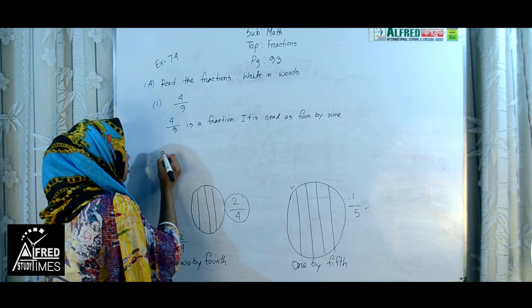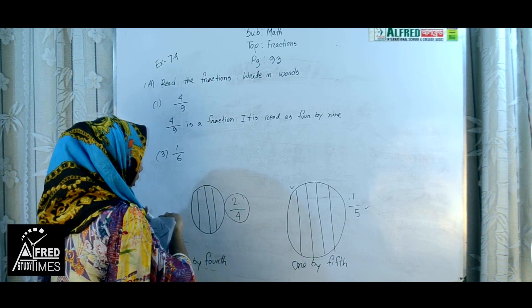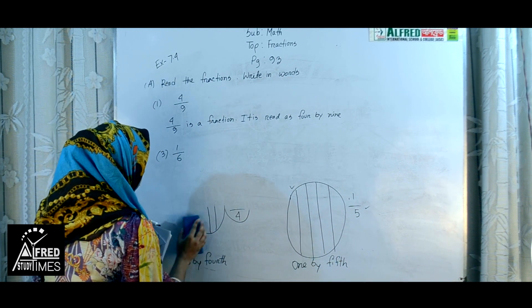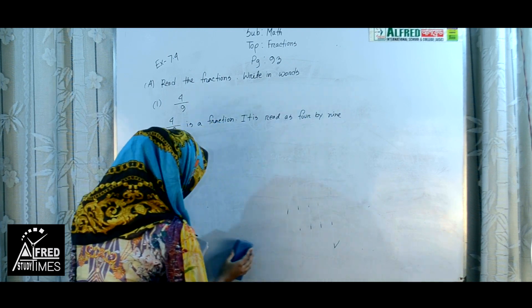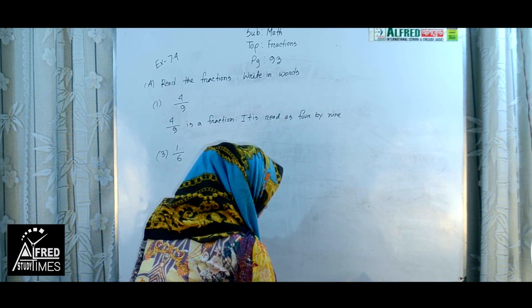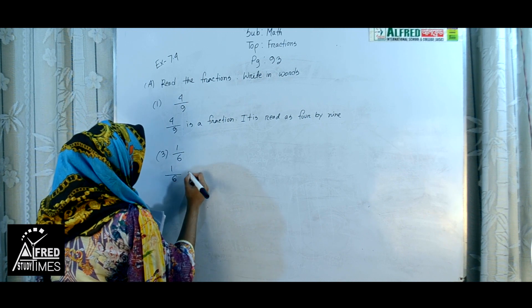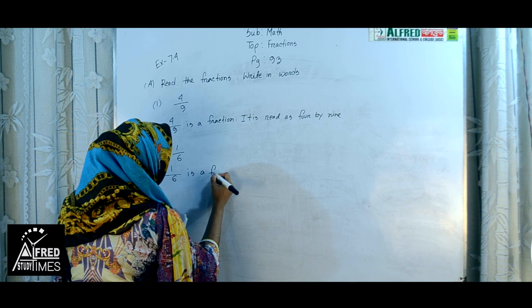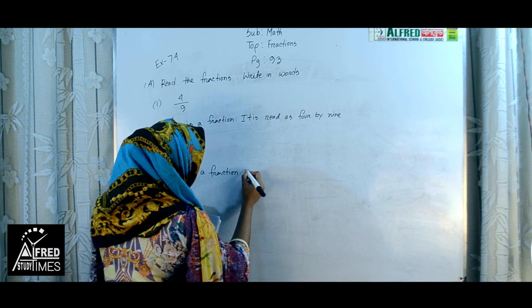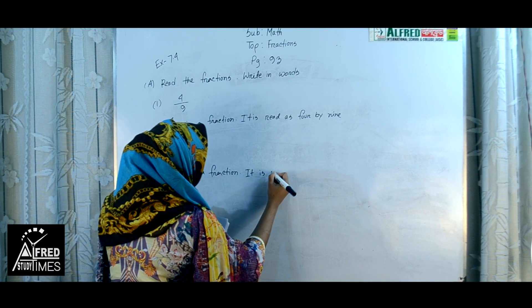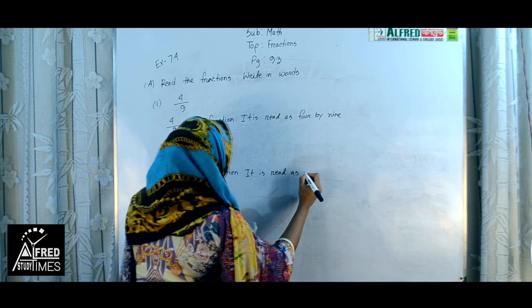Number 3: 1 by 6. Again, 1 by 6 is a fraction. It is read as 1 by 6, written in words.